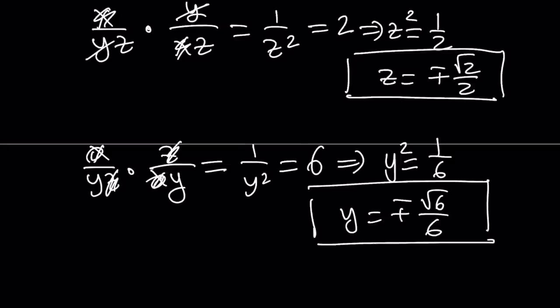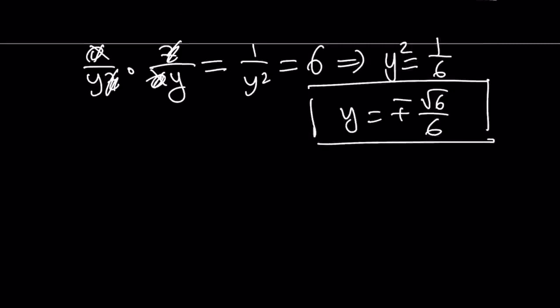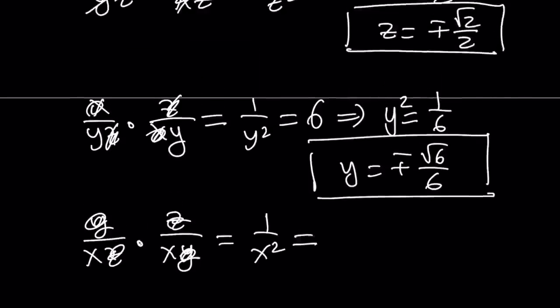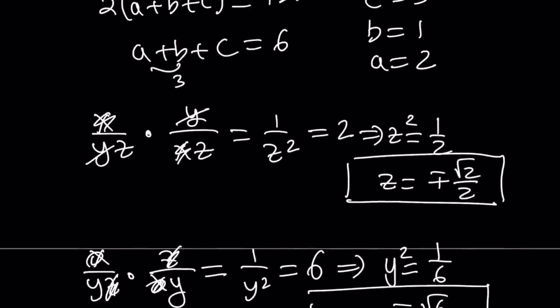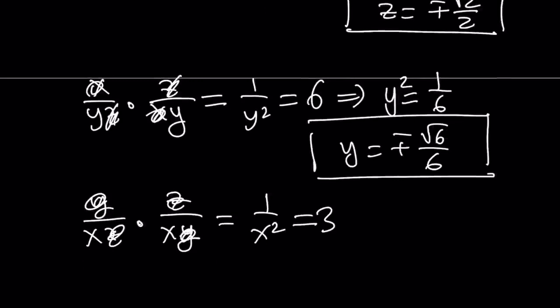And how do you find the X value? You multiply B and C together. What is B? Y over XZ, and C is Z over XY. Here Y cancels out, Z cancels out, and we end up with 1 over X squared. But if you multiply B and C, you get 3, right? And from here you get X squared equals 1 third, and X becomes plus minus 1 over root 3, which can be written as root 3 over 3 with the plus minus sign.